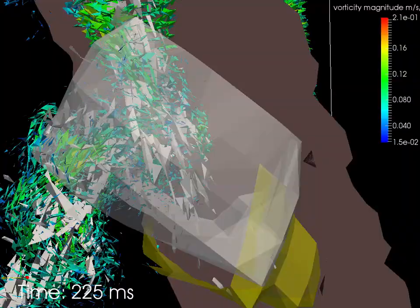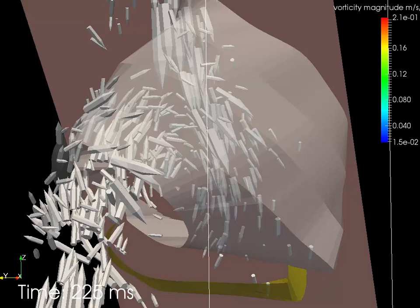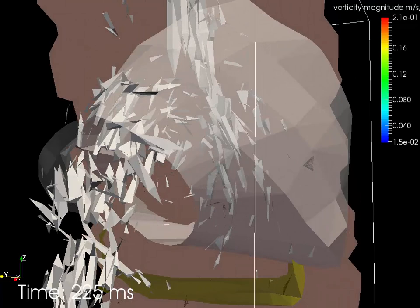There's strong vorticity generated around the IVC and from the mixing of the hepatic veins and the IVC. This flow ends up creating an overall rotation in the atrium.